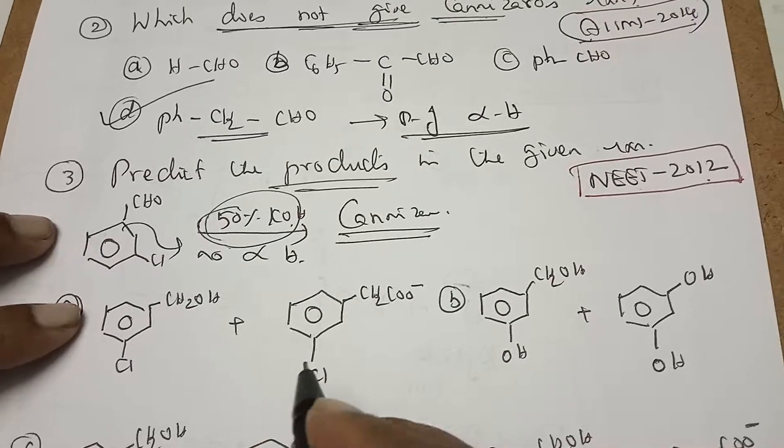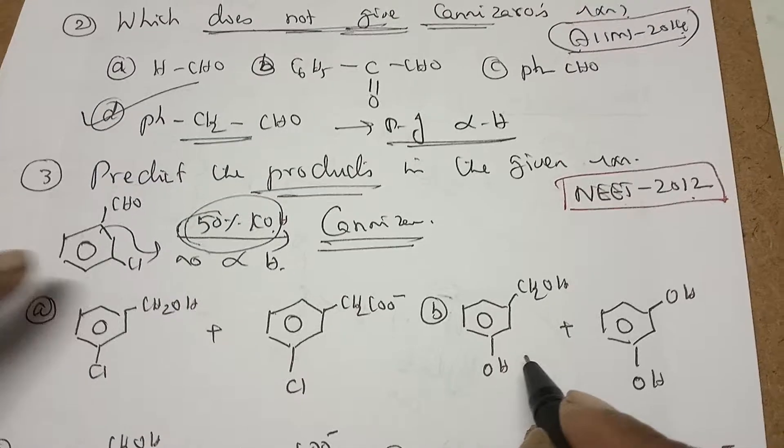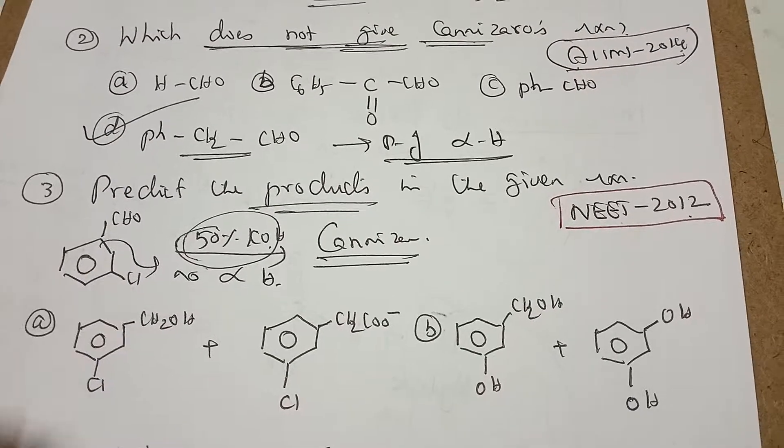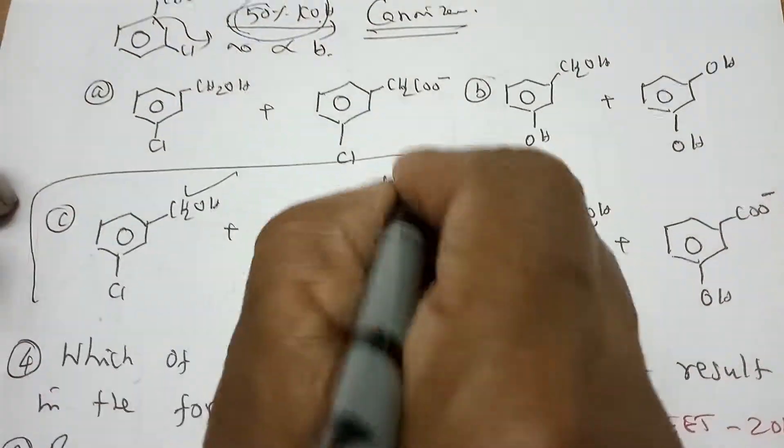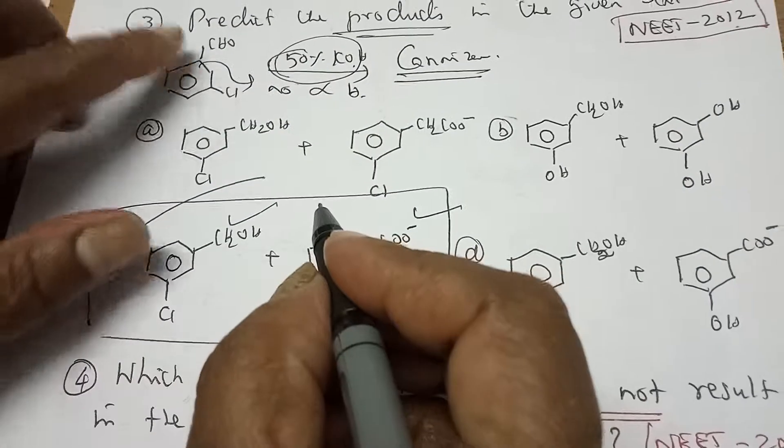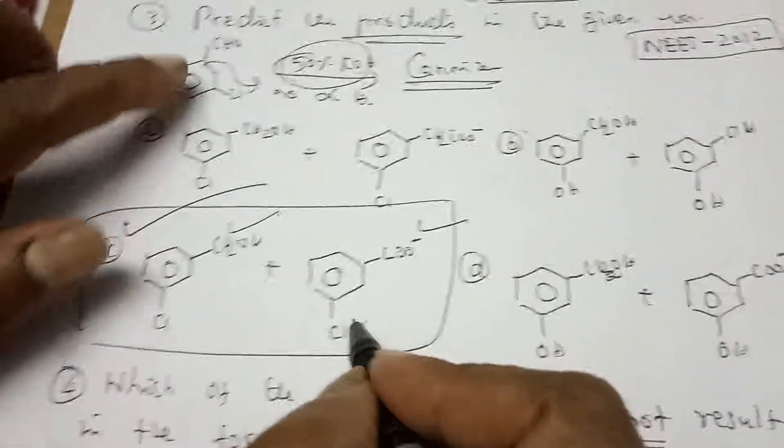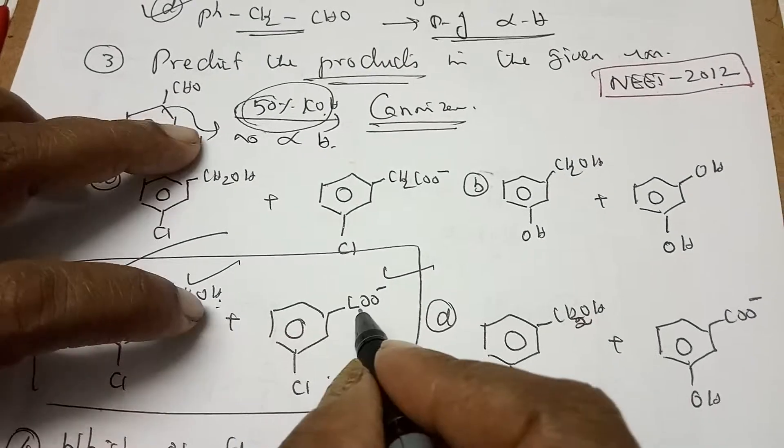So now let us write the product. One should be the alcohol. Here you are having four things. Now the meta position chlorine should be there and one is the alcohol, another is the acid. So this pair of products option is C. So again I am repeating, meta position two chlorine is there. One is the alcohol. Your aldehyde is the reduced product, another is the acid.